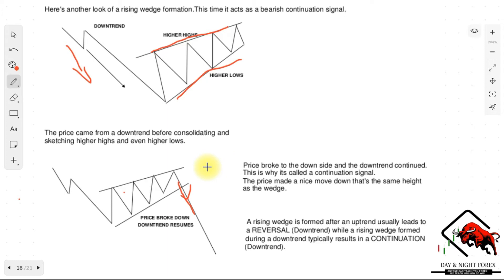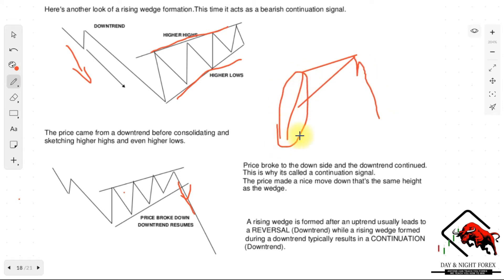To summarize: a rising wedge formed after an uptrend usually leads to a reversal into a downtrend, while a rising wedge formed during a downtrend typically results in a continuation of that downtrend. If you spot it in an uptrend, expect a reversal with the market moving down approximately the same number of pips. If it forms in a bearish market, expect it to be a continuation pattern continuing downward.